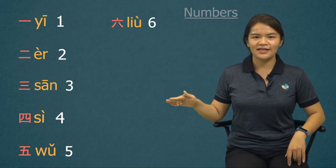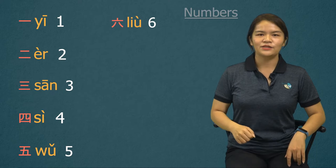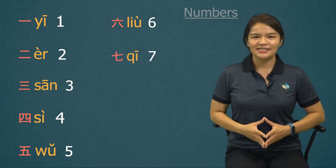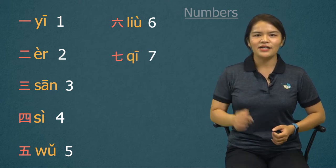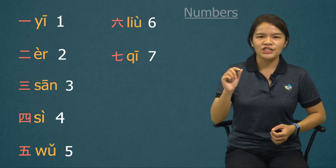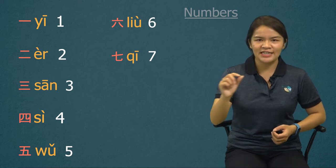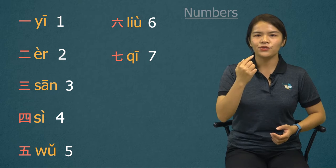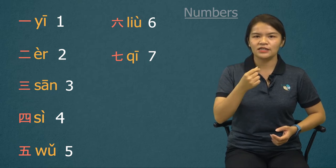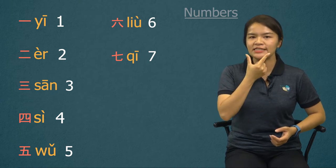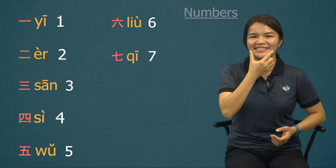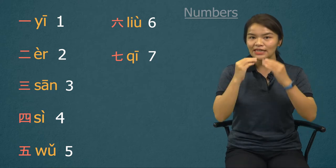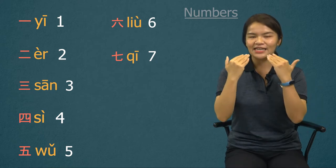Number seven. 七, 七. You can think about 'qi' for 'cheese', but don't make your lip rounding at first. Pronounce 七, 七 — your lip is flat.